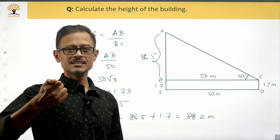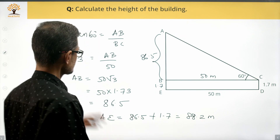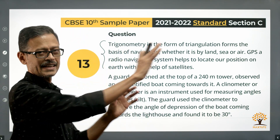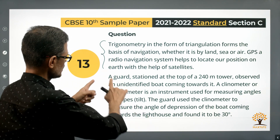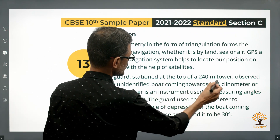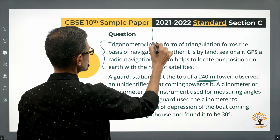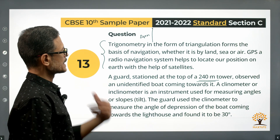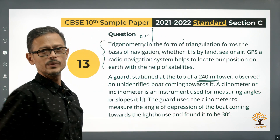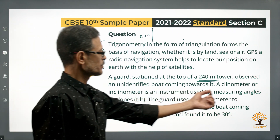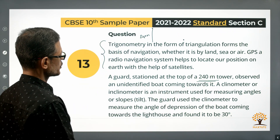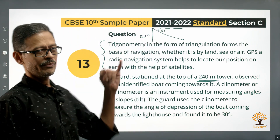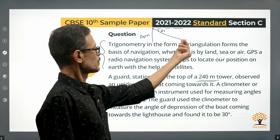Both variants of Section B are done. The second choice was a little easier in terms of calculation. Now moving into the Section C case study question. A guard stationed at the top of a 240-meter tower observed an unidentified boat coming towards it. The guard used a clinometer — an instrument used for measuring angles — to measure the angle of depression to be 30 degrees. So the height of the tower is 240 meters and the angle of depression of the boat from the tower is 30 degrees.